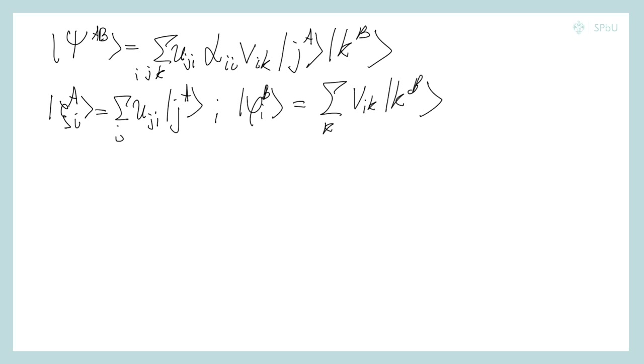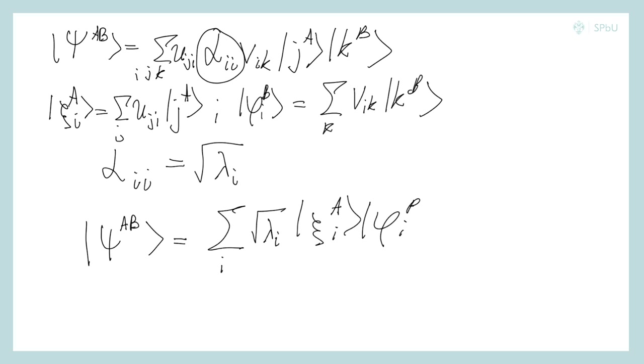Now we can denote, since the alpha i i are non-negative, we can redefine it in such a way: let alpha i i be denoted by square root of lambda i. And what we got now? Actually, we've got the statement of the Schmidt theorem or the Schmidt decomposition. So, Psi AB equals sum over i square root of lambda i xi i A phi i B. This completes the proof.